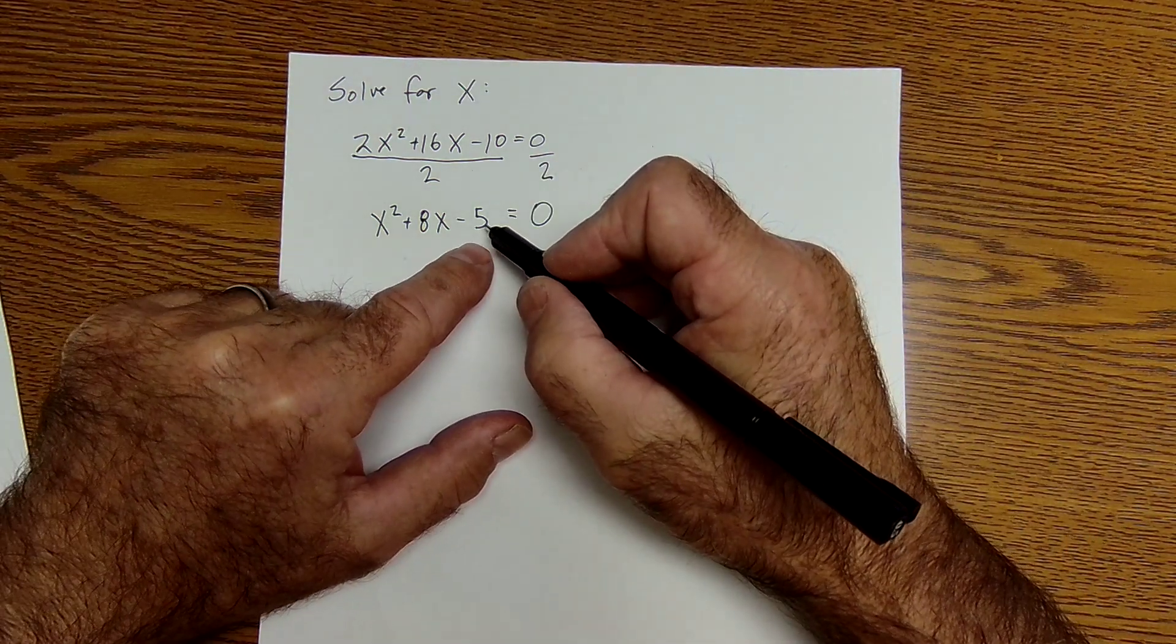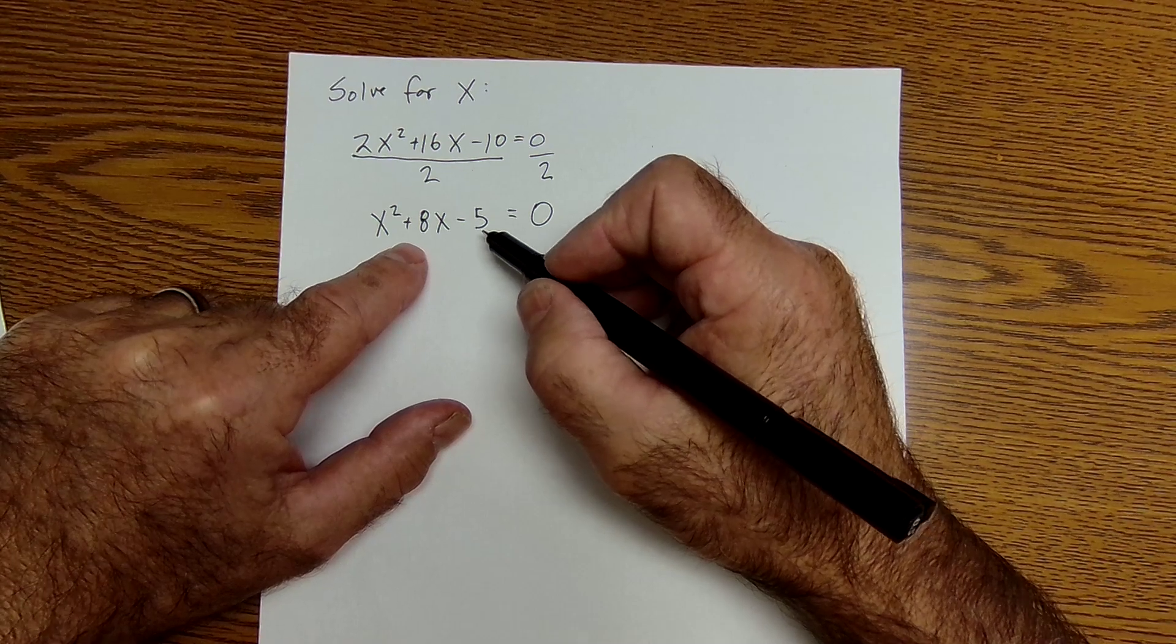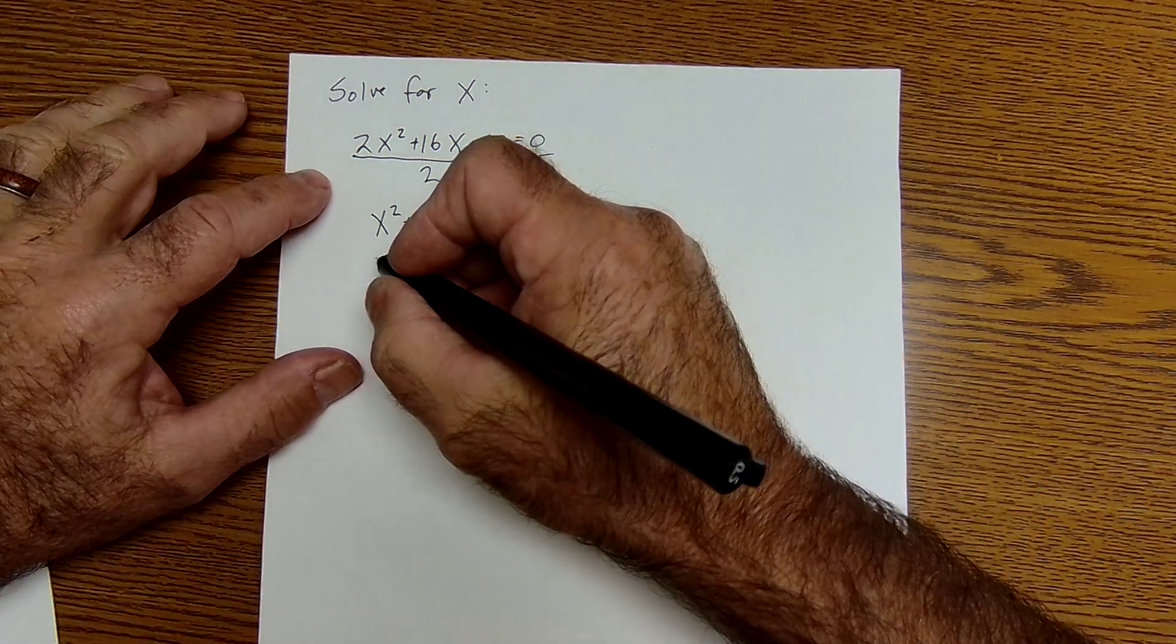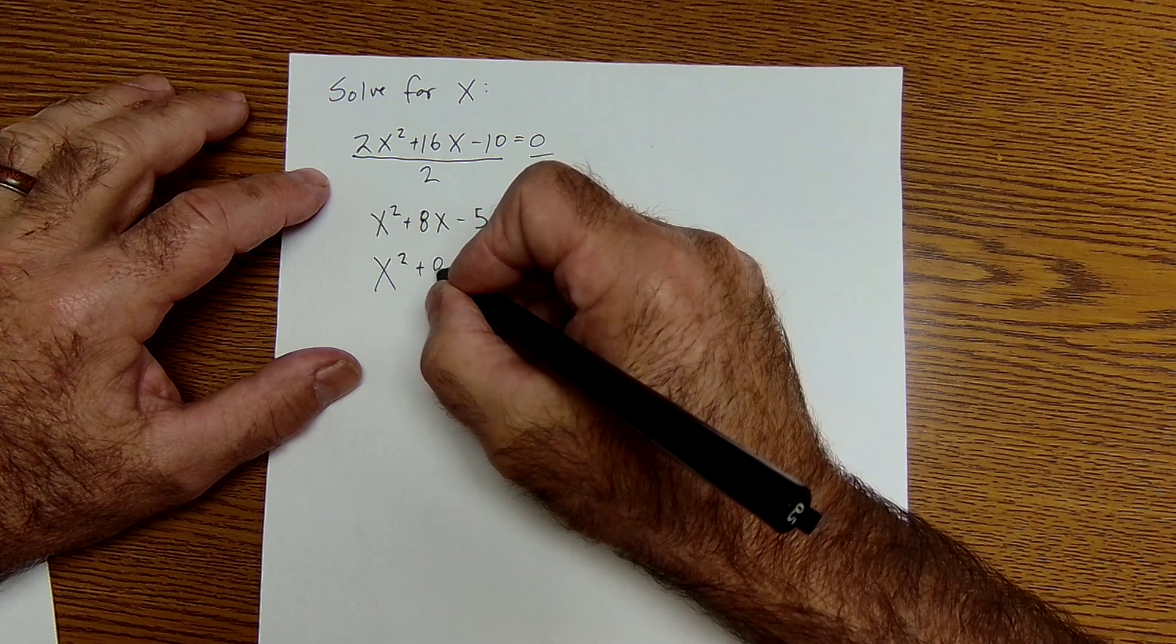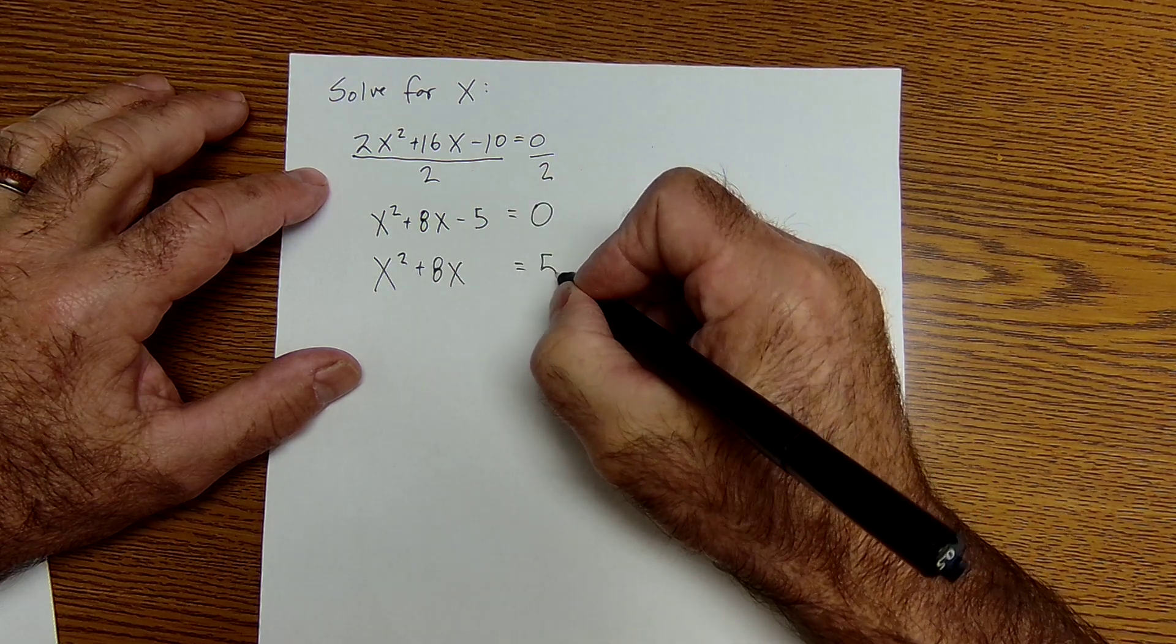I'm checking to see if there are factors of 5 to give me 8. There are none, so I'm going to add that 5 to both sides to get X squared plus 8X equals 5.